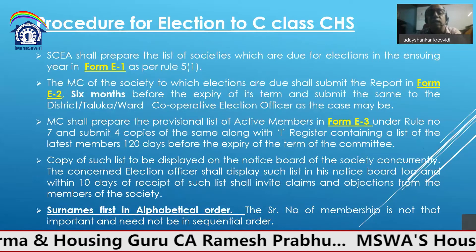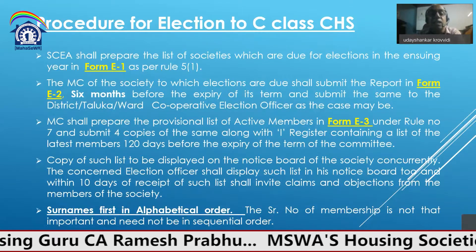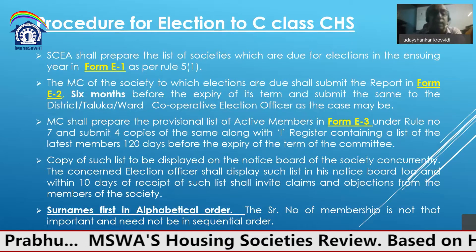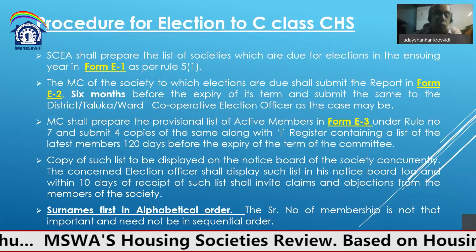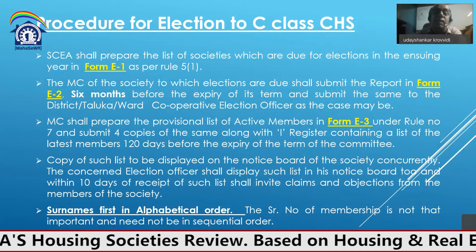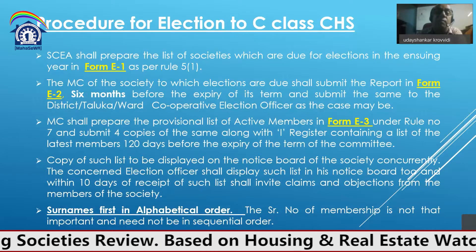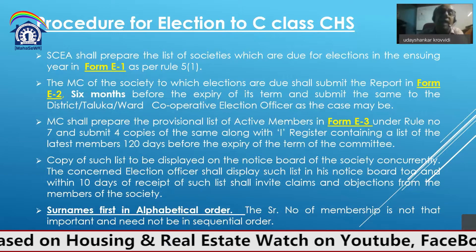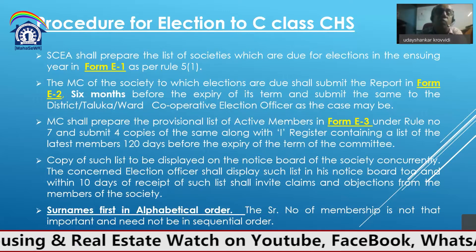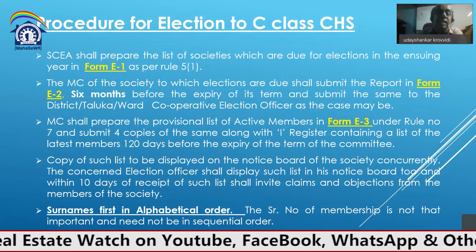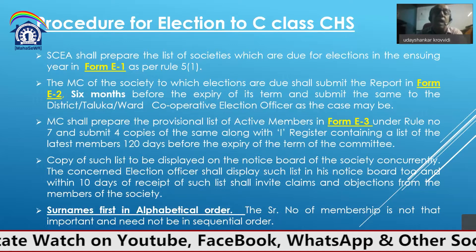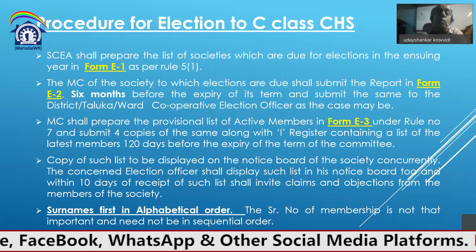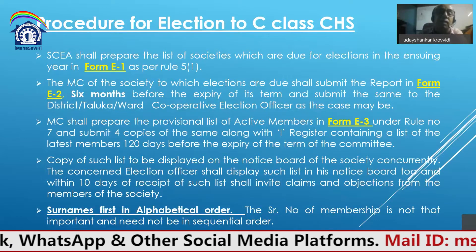Regarding the procedures for the election of Class C societies: cooperative societies use different types of forms. For example, when you register a society, we have the A and B forms, or C forms for a housing society. Thereafter, we have the E form for elections, and the I form for maintaining the members list.